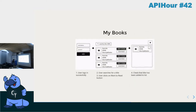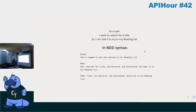This is our user journey: the user logs in, then there's a search bar where they can type the name of a book, the results come up, and there's the possibility to add it to the reading list. Using BDD syntax — given that a logged-in user has nothing in their reading list, when the user searches for 'Life, the Universe, and Everything' and adds it to their reading list, then 'Life, the Universe, and Everything' should be in their reading list.